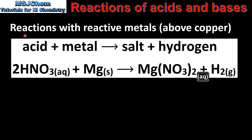Next we look at reactions with reactive metals. Those are metals that are above copper in the reactivity series. The general equation is acid plus metal makes salt plus hydrogen. In this example we have nitric acid reacting with magnesium to form magnesium nitrate and hydrogen.